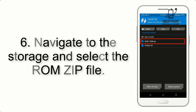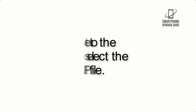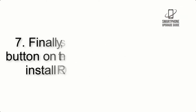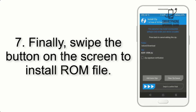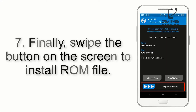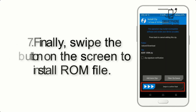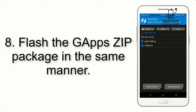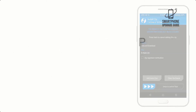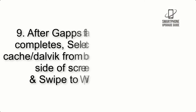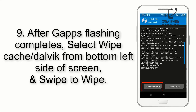Step 5: Go back to the recovery main screen and tap on the Install button. Step 6: Navigate to the storage and select the ROM zip file. Step 7: Finally, swipe the button on the screen to install the ROM file.